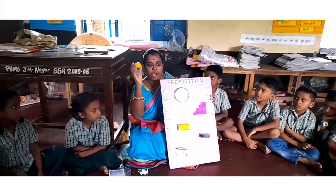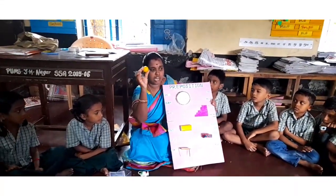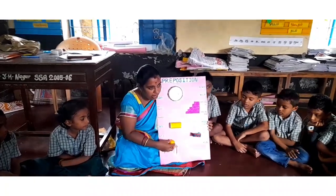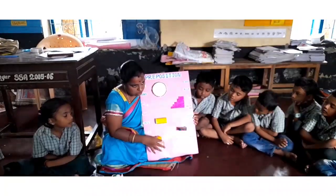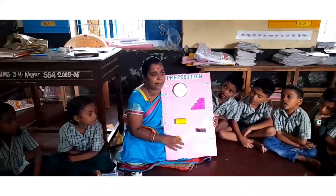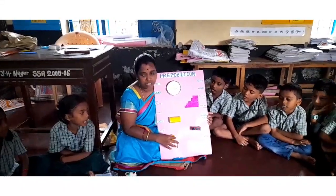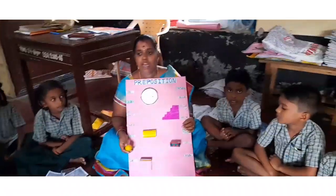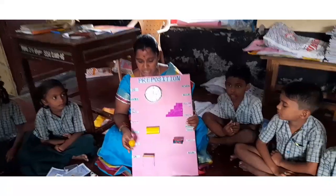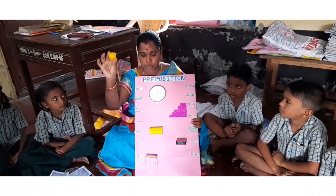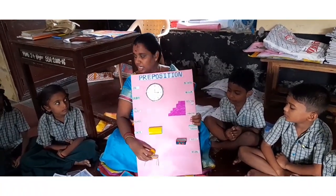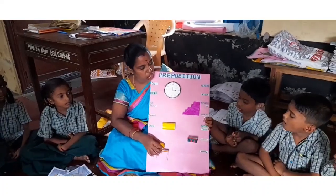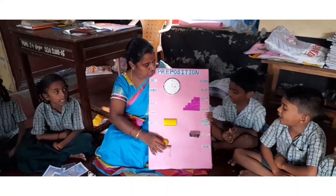Now, you are going to tell me using ball. Where is the ball? On the table. Very good. On the table. Where is the ball? On the table. Now, I am keeping this ball here. Where is the ball? On the table.